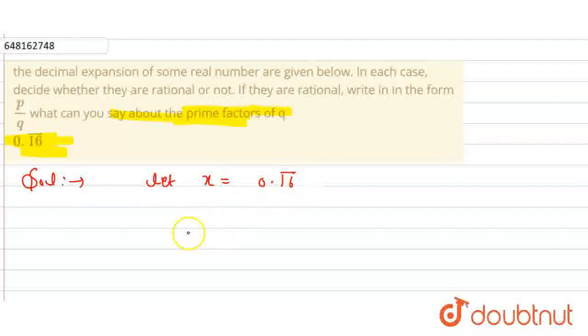So now we have 2. What do we do? This first equation is multiplied by 100. Multiply equation 1 by 100. So here we have 100x and here we have 16.16 bar.